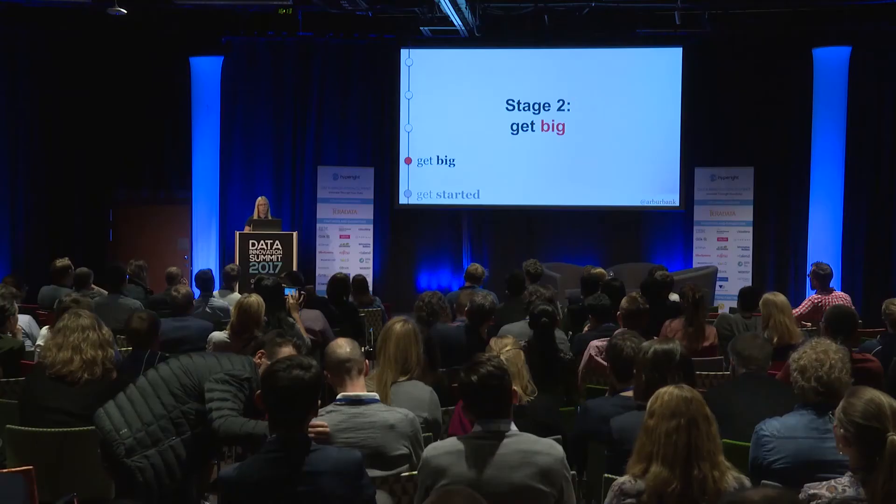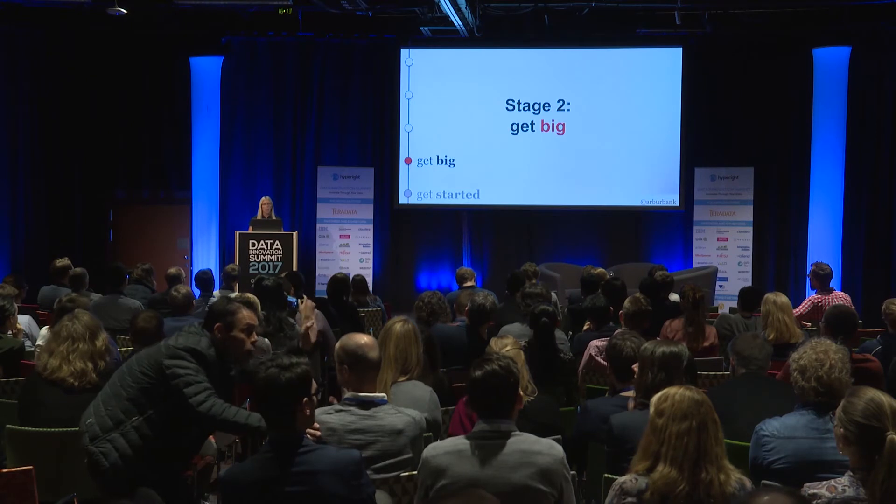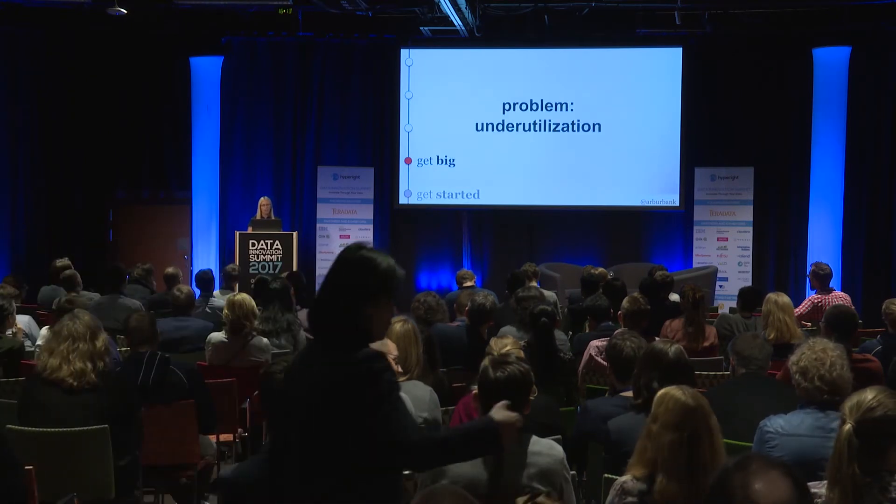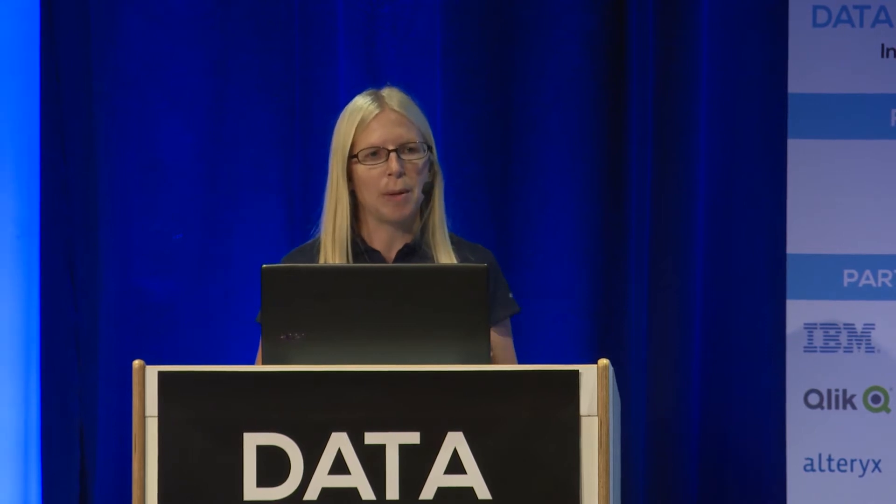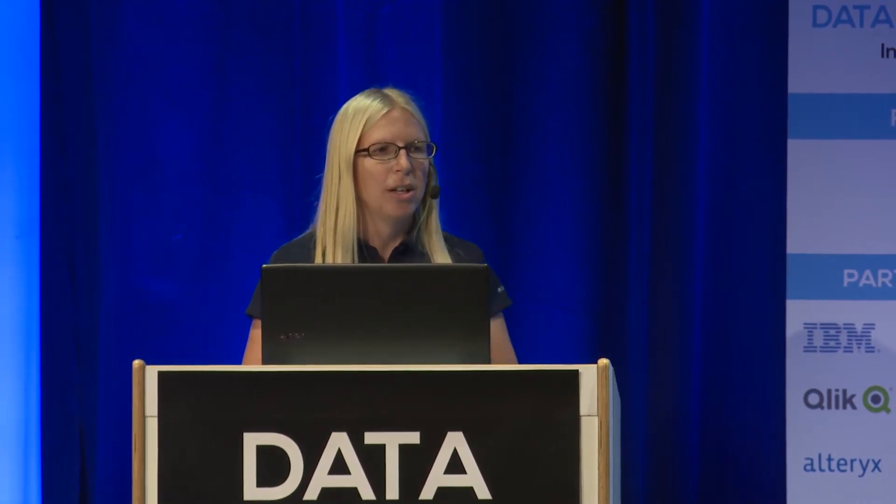That's why stage two is what I call getting big. The problem you have here is not that your framework doesn't work. As software engineers and very logical people, we tend to think that a great product will speak for itself. Unfortunately, that's really not true. Even if your A-B framework does all the things correctly and will help people make correct decisions, they've been doing what they've been doing for a while. Why are they going to add this extra friction to the process to run an experiment?